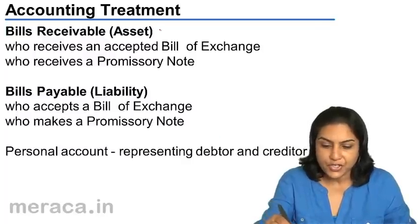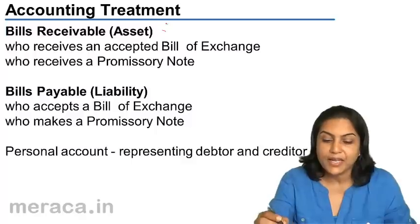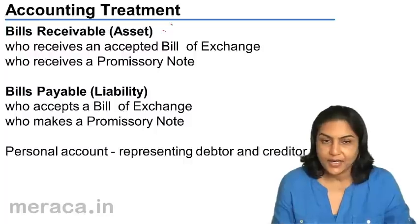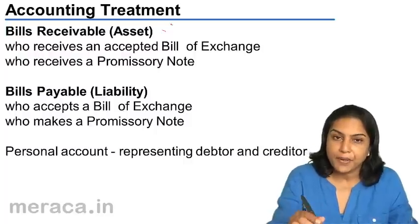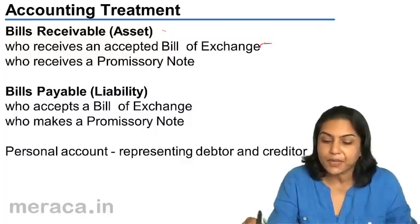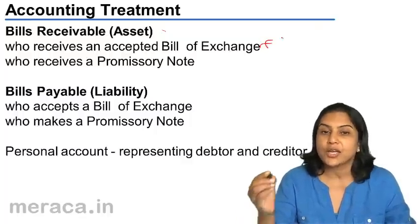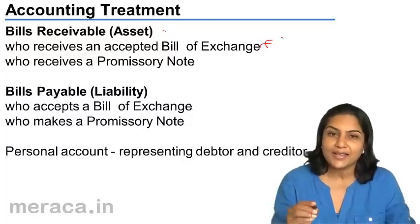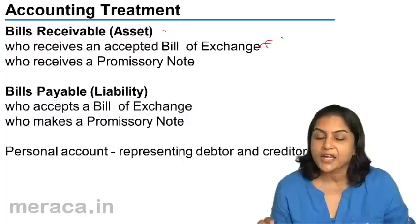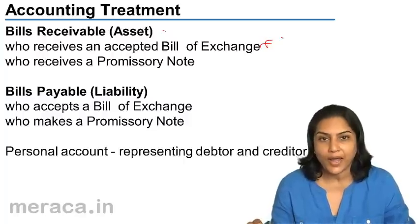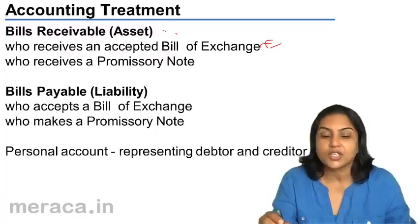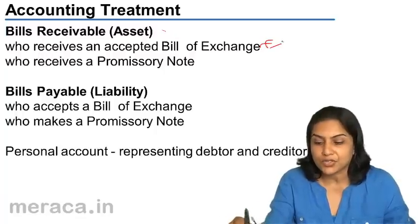A bill of exchange on which money is to be received is therefore an asset. It is called a bill receivable in the books of the person who has received an accepted bill of exchange. In our example, when X had sold goods to Y, X drew the bill of exchange and it was accepted by Y. So in the books of X, this bill of exchange is shown as a bill receivable.